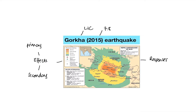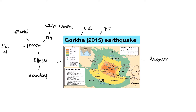For primary effects, the key facts you'd want to quote in the exam: there were 8,841 deaths, and 1 million people were made homeless. A lot of buildings collapsed — infrastructure in an LIC probably isn't the greatest, so that's typical. There were also 352 aftershocks, which happen as the plates settle back down into their original position.